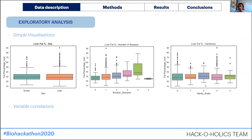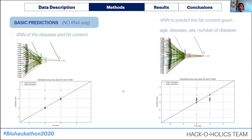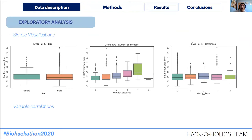We also made a graph taking into account the Hardy scale of the deaths — how the patients died. But that had too much noise and random input for the sample size, so it didn't give us a very good picture of what's happening and why.